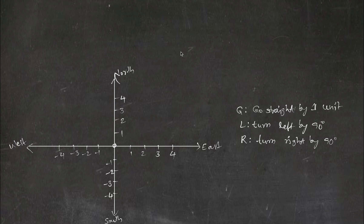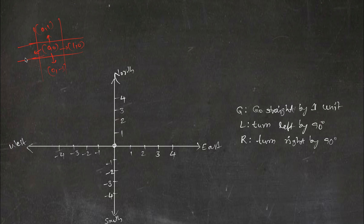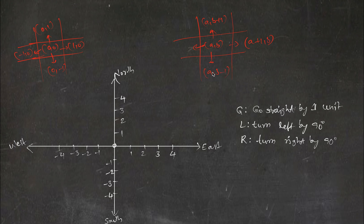Before writing the program, let us understand one thing. If we are at position (0, 0), moving north goes to (0, 1), moving east goes to (1, 0), moving south goes to (0, −1), and moving west goes to (−1, 0). In terms of (A, B): north is (A, B+1), east is (A+1, B), south is (A, B−1), and west is (A−1, B). Keep this in mind when writing the program.